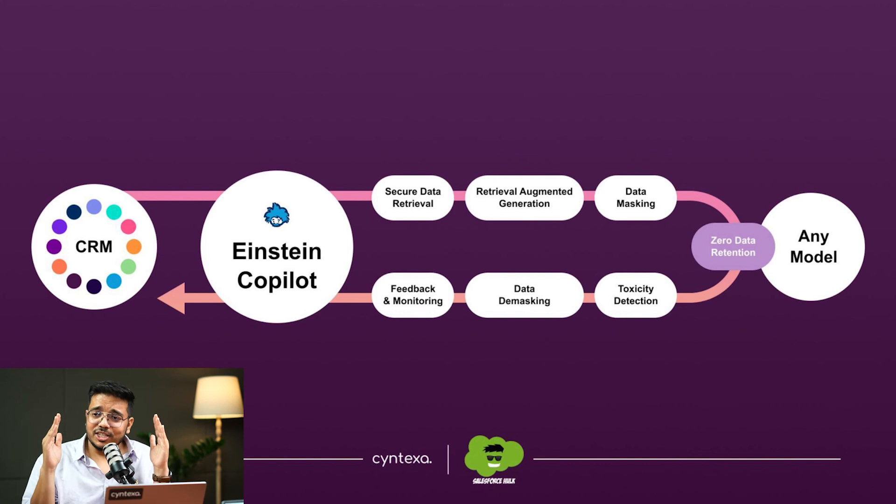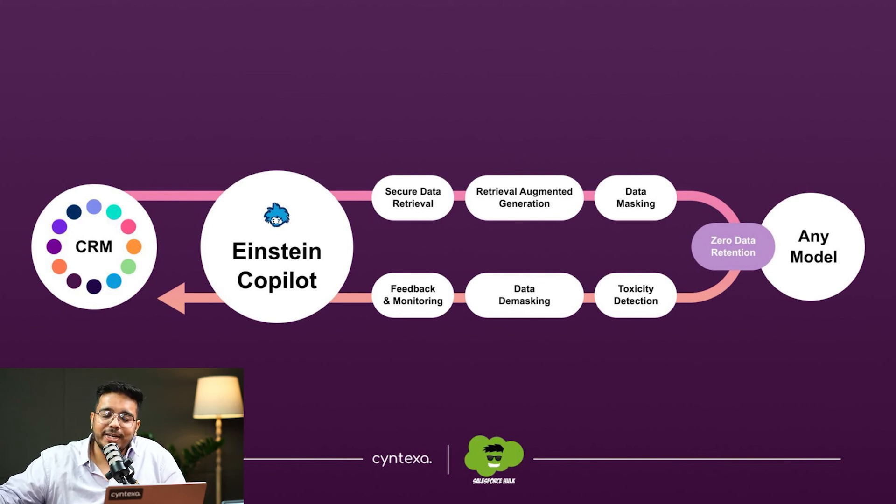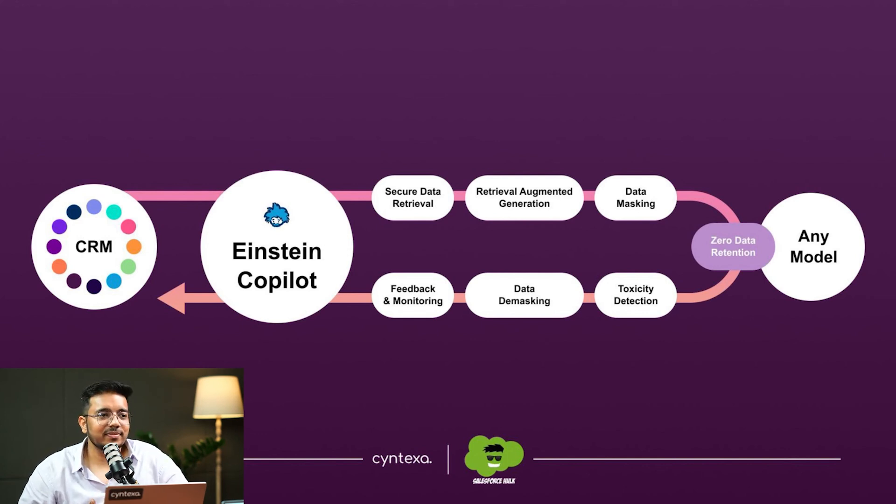This trust layer is very important and is what makes Salesforce stand out from its competition, allowing a completely secure and compliant AI integration into its platform. Salesforce has recently changed their values order, placing trust first, because as AI is booming, businesses are asking whether AI is storing their data to make better predictions. Salesforce is trying to help businesses understand how this trust layer masks their data and then unmasks it, ensuring that business information is not being used anywhere other than empowering their own business.